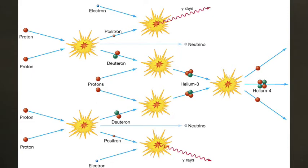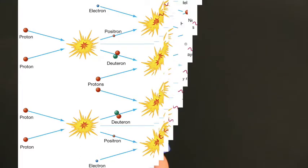That reaction creating a deuterium nucleus from two protons occurs all the time inside the sun. It doesn't take very long before one of these deuterium nuclei runs into another proton, and the two stick together once again — creating a nucleus of helium-3, with two protons and one neutron. So you've created one nucleus of helium-3 from three protons. When two helium-3 nuclei collide, they stick together to create a nucleus of helium with two protons and two neutrons, and the two leftover protons go flying back into the sea of protons in the sun. This is a very efficient process by which the sun creates energy.